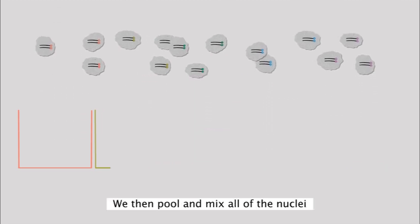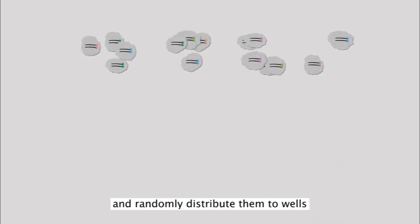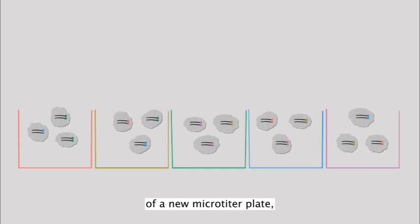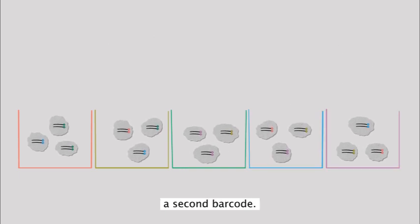We then pool and mix all of the nuclei and randomly distribute them to wells of a new microtiter plate, where the cDNA molecules receive a second barcode.